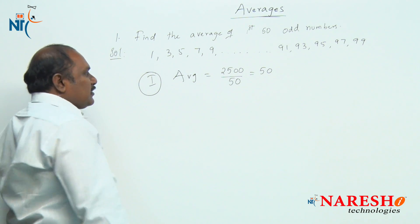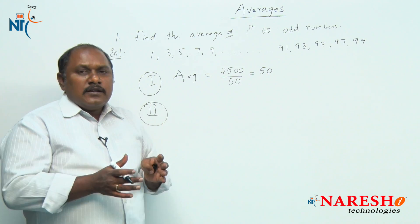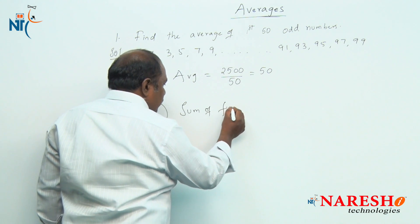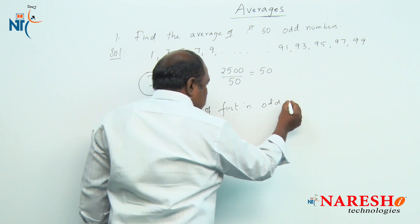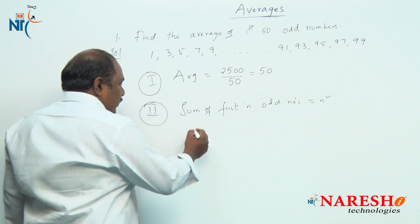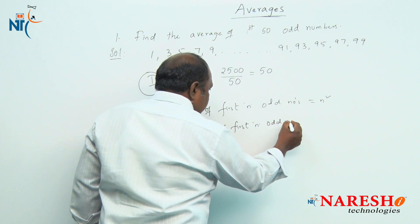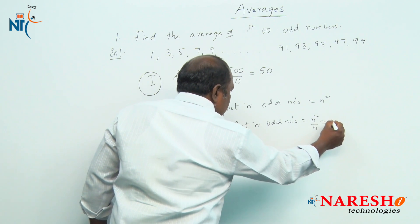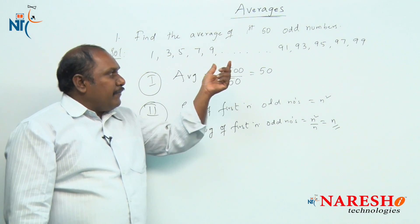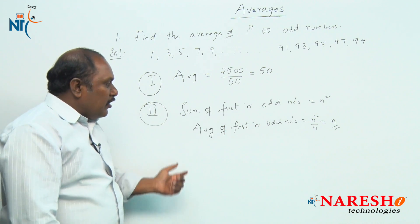Now this is the first way to answer this particular question. The second way: instead of adding like this, we can directly apply a formula. What is the sum of first n odd numbers? The sum of first n odd numbers is n squared. So the average of first n odd numbers is n squared by n, which is n. Therefore, the average of first 50 odd numbers is directly 50.